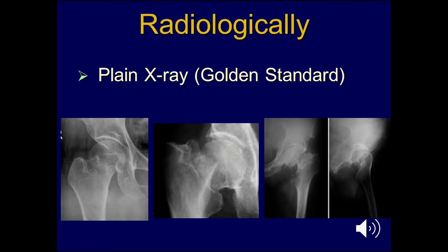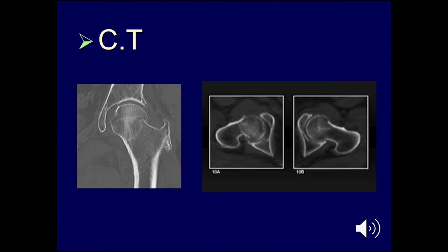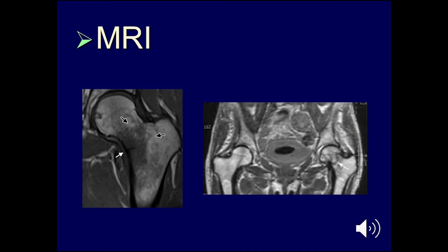Radiologically, the gold standard remains the plain X-ray, which can usually provide the diagnosis and guide management. However, in some cases, CT is used — for example, to diagnose a mildly impacted Garden type 1 fracture that could have been missed on plain X-ray. MRI is also very useful, especially when doubting occult fractures or stress fractures such as compression-type fractures of the neck.